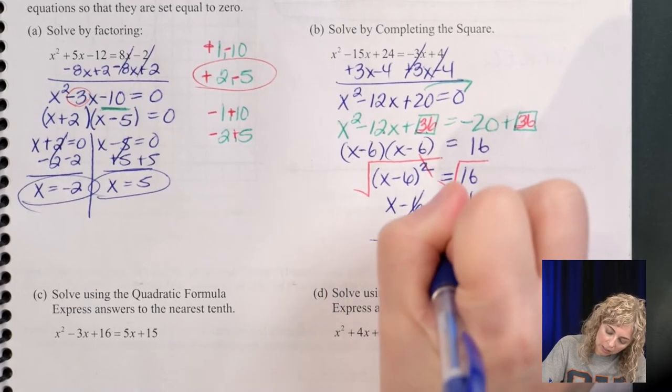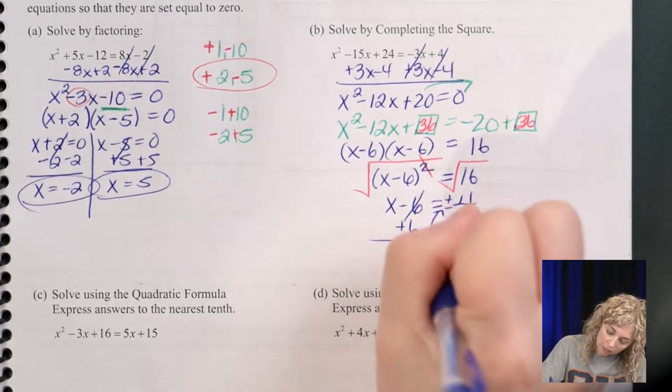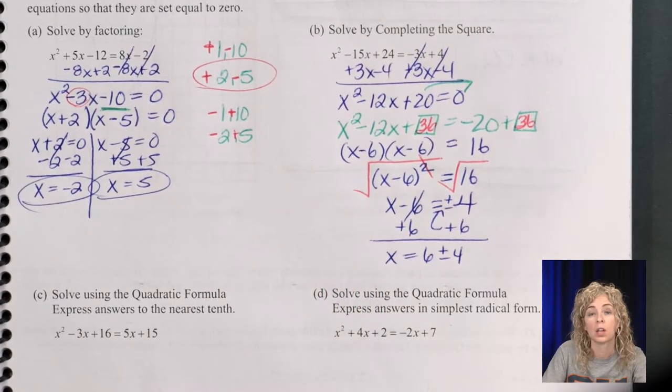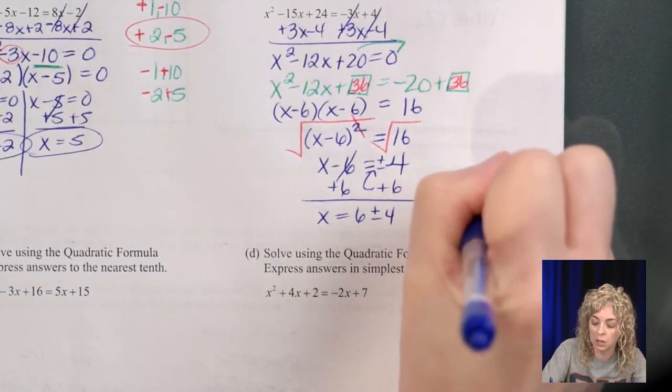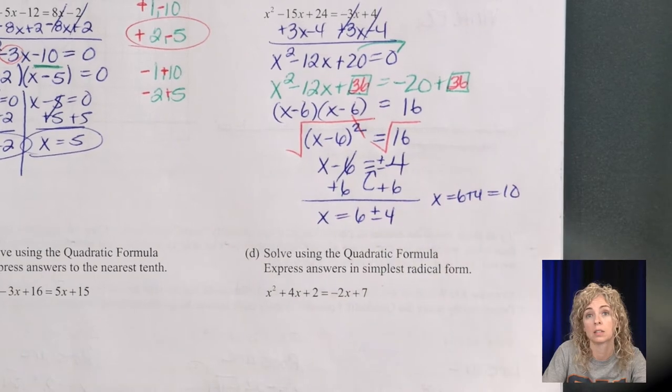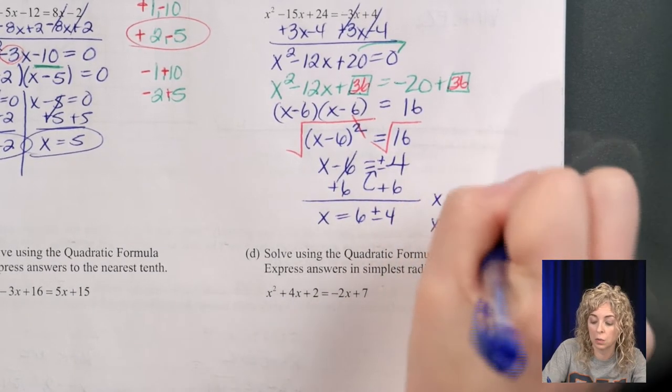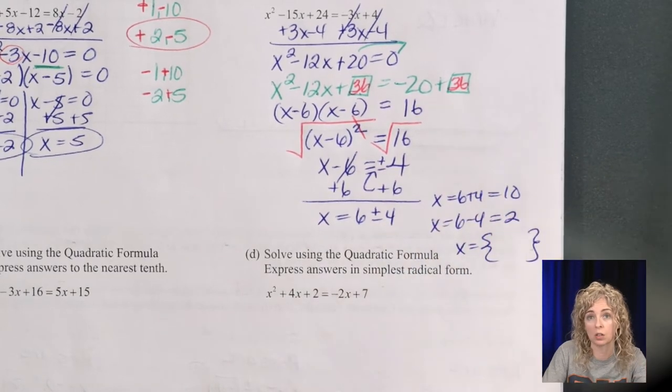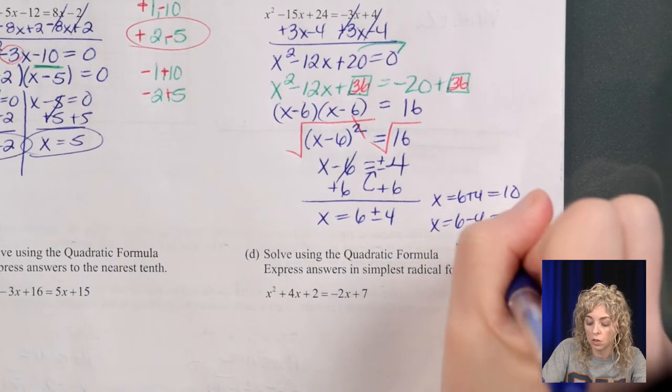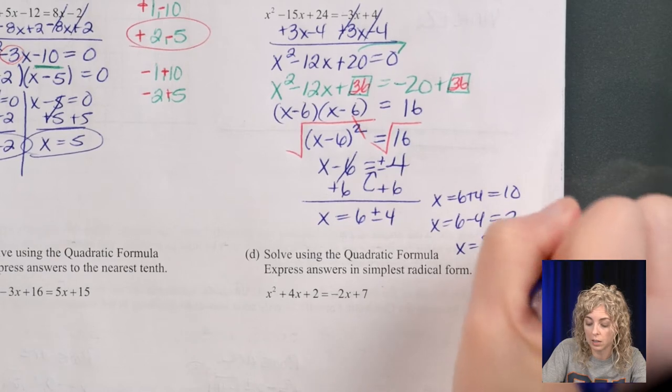So finish by adding the 6 to solve for x. And we get x equals, remember I like to slide the 6 first, 6 plus or minus 4. So one answer is x equals 6 plus 4 or 10. The other answer is 6 minus 4, which is 2. So I'll write my answers this time in a solution set, 2 and 10.